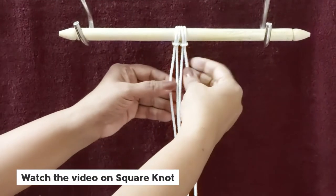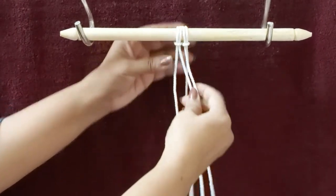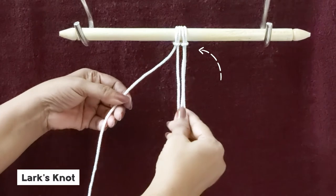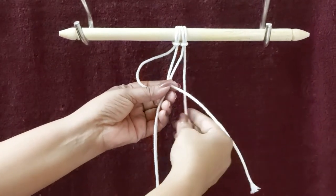This knot is very similar to the square knot that we saw in our previous video. I have already tied two strings on the dowel using the lark's head knot. So let's begin.